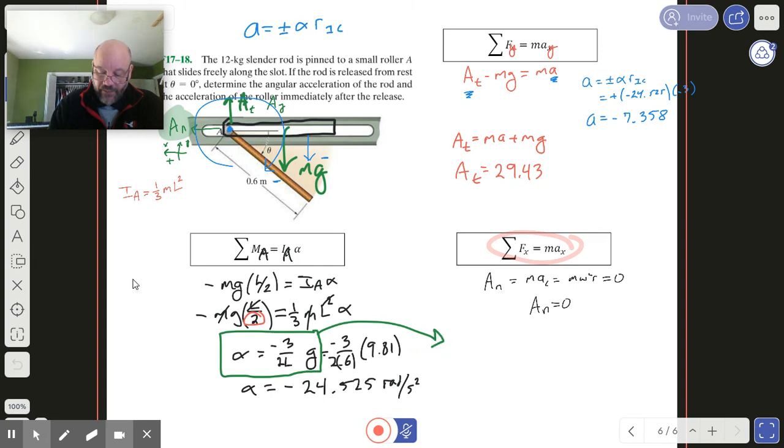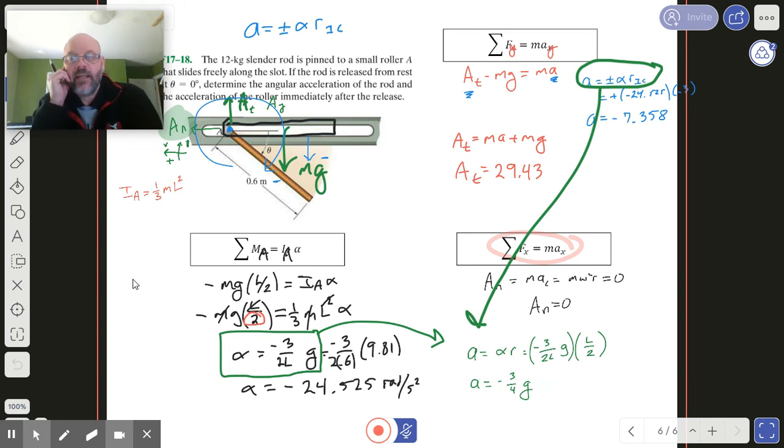Now I want to do a little bonus thing for you because it's pretty cool. We ended up having this result right here for alpha. Let's bring that over here. And up here we had that a equals that stuff, so let's bring that in here too and say that a equals alpha times r. What we had for alpha was minus 3 over 2L times g, and the value of r is actually L over 2. So the length of the thing doesn't matter - look at that, the length cancels out. We get the acceleration is minus three-fourths g. How cool is that?